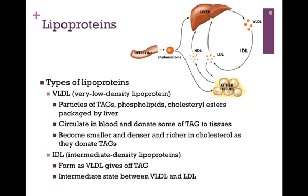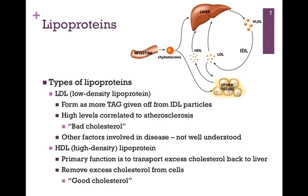Next, we have intermediate-density lipoproteins, or IDL, which form as VLDL give up some of their triacylglycerols. IDL is only an intermediate state between VLDL and LDL, so the circulating concentration of IDL is not high. The primary circulating form is LDL — low-density lipoprotein particles — which form as those IDL particles give off more of their triacylglycerols.